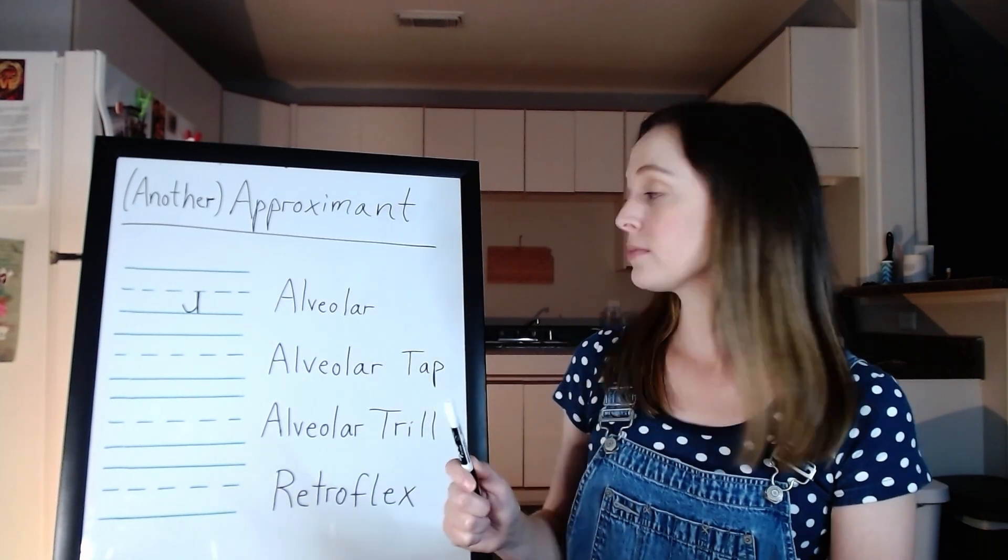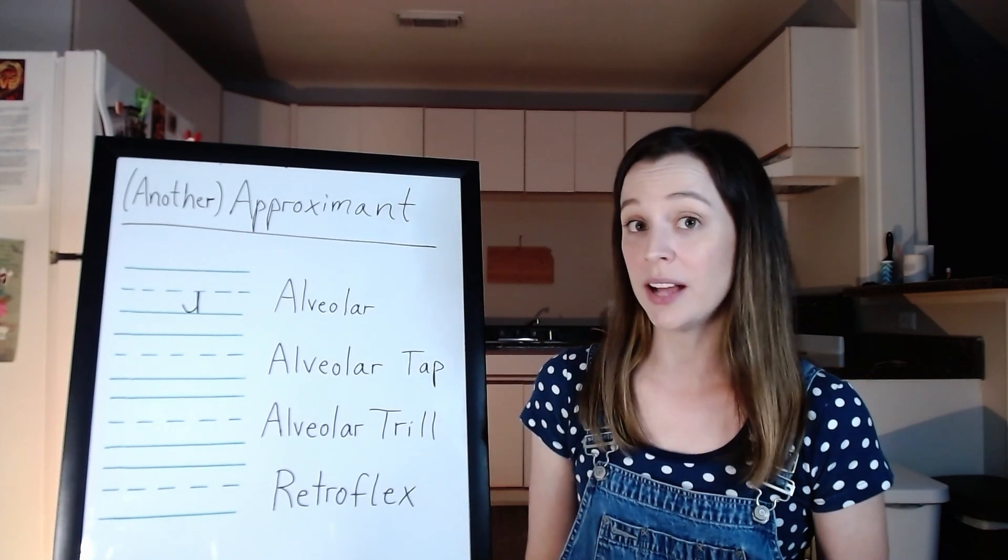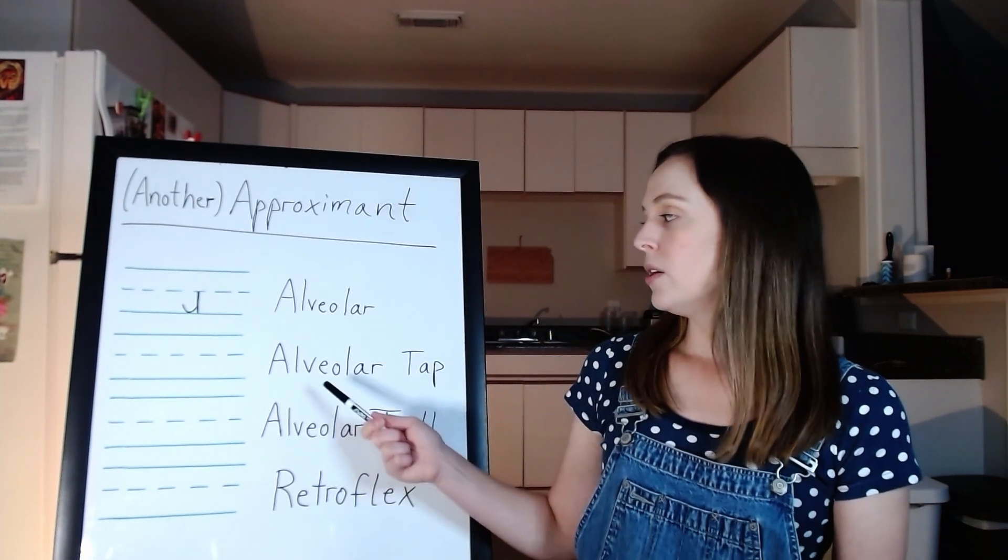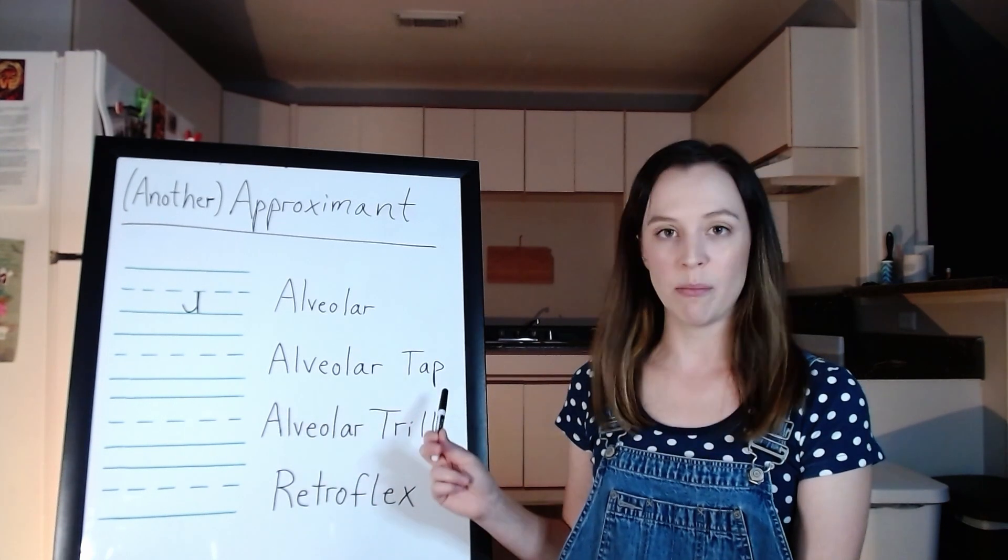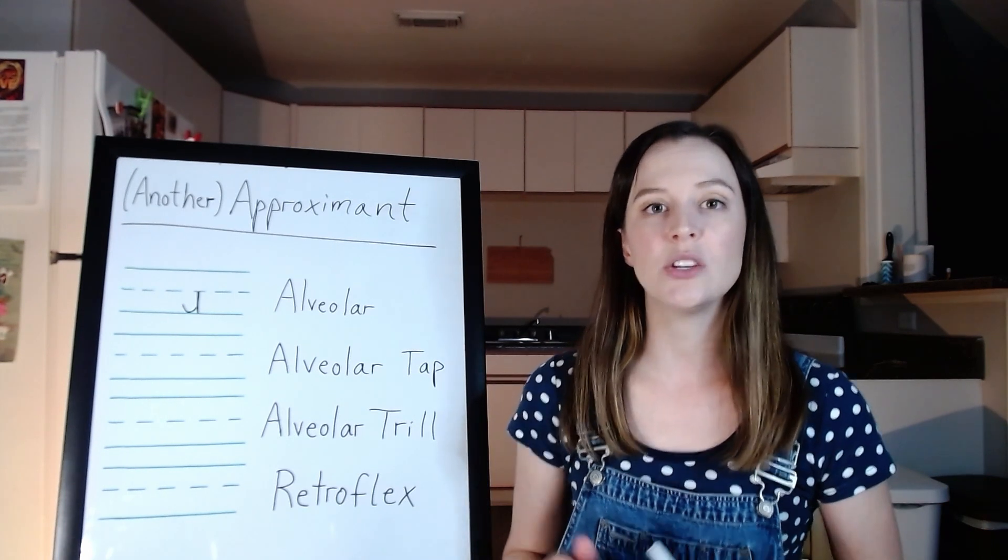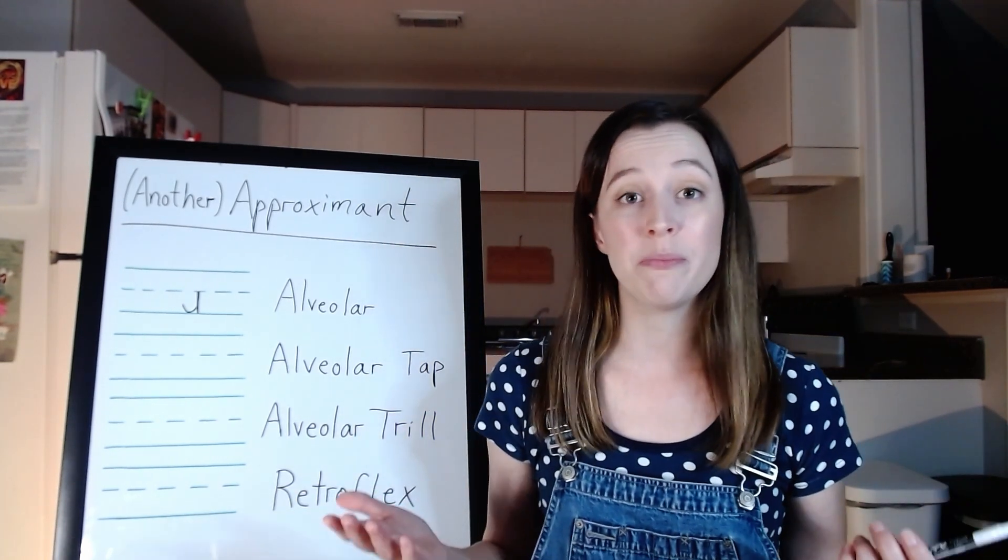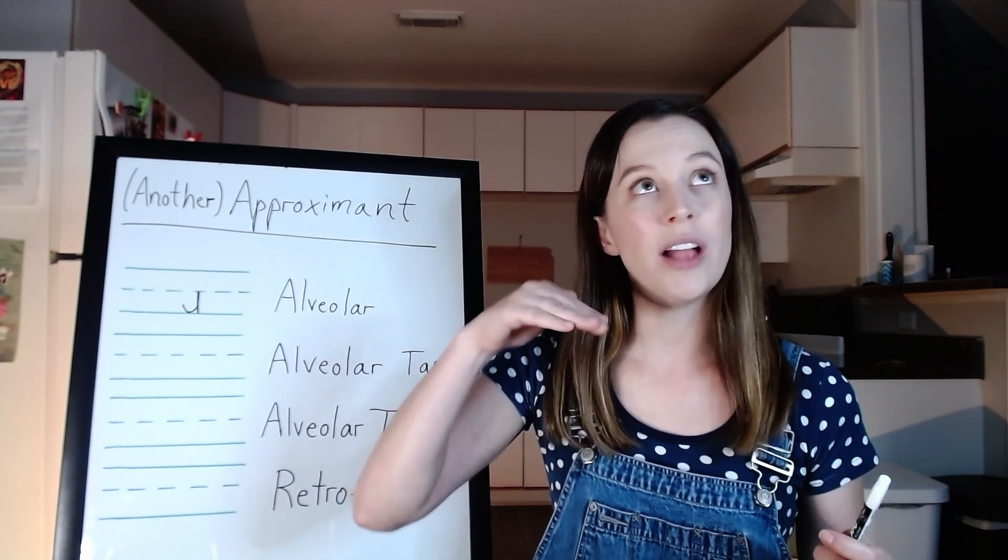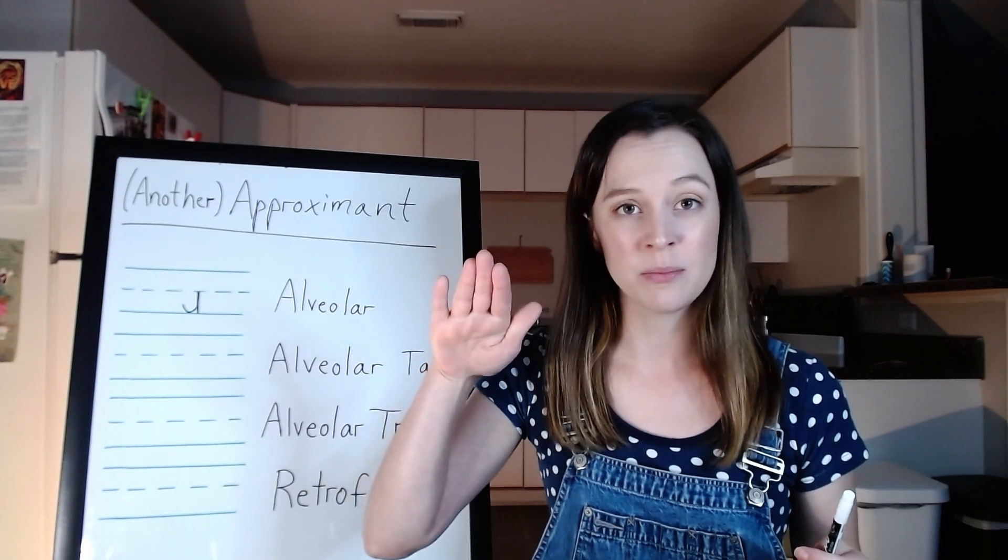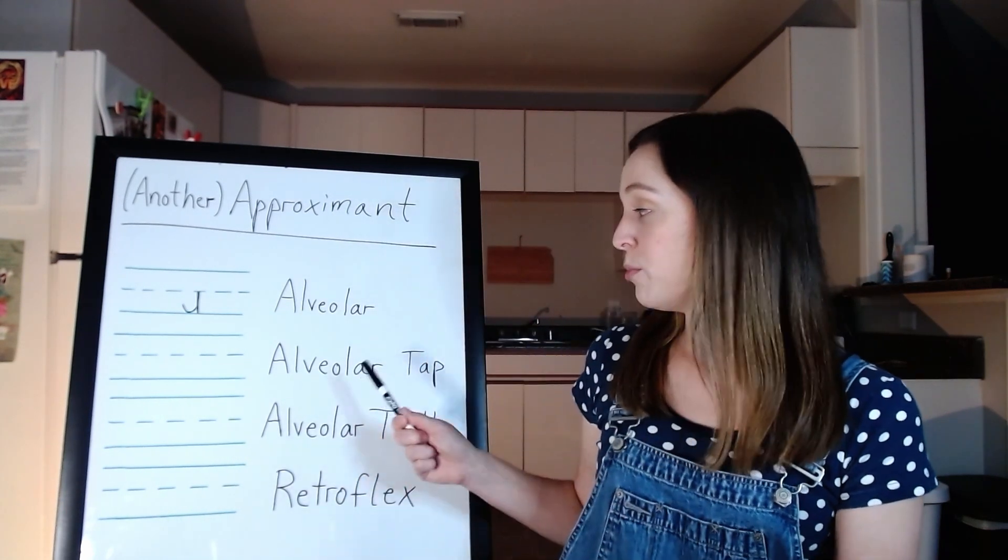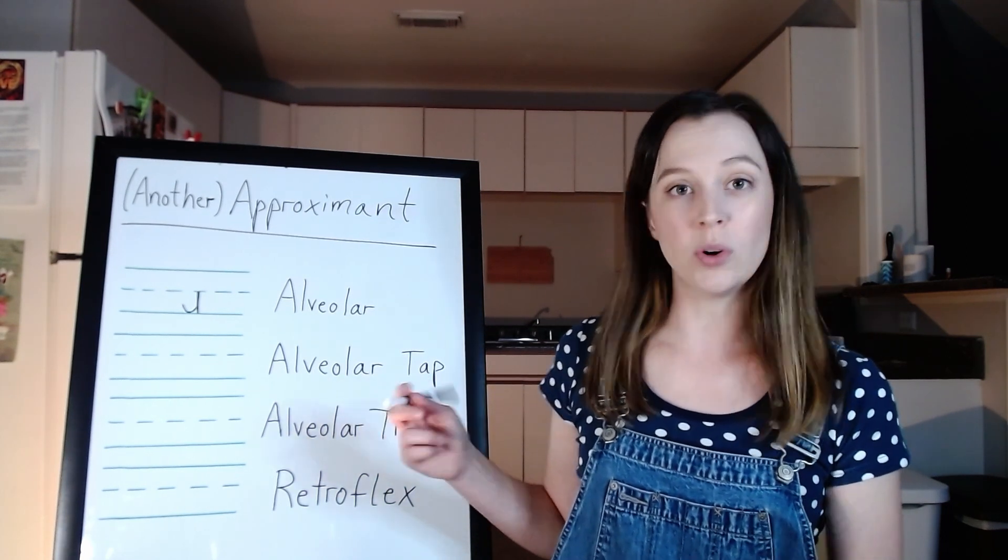Now, I am about to blow your mind. I say this because it blew mine when I learned about it. Sometimes, people use an R called an alveolar tap, or a tapped R. And this, you might be really familiar with, if you speak Spanish, the word perro, perro, perro, and your tongue kind of goes perro, that little tap sound.